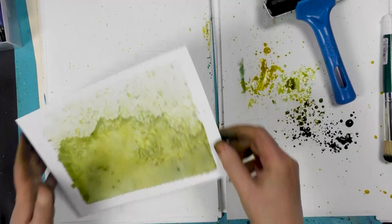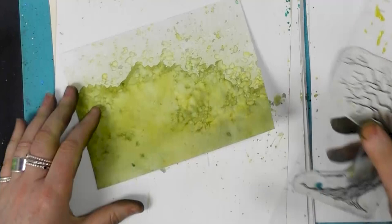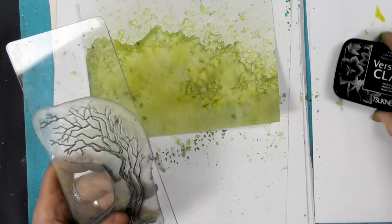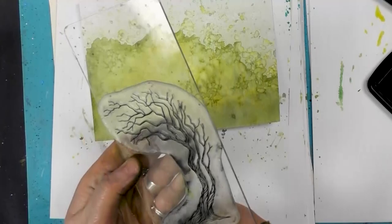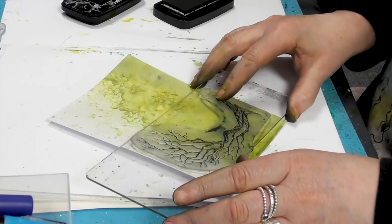And now we're going to stamp our lovely new trees. To start with I'm going to ink up in the Nocturne and I'm going to pop that down around about there. Give that a good press.